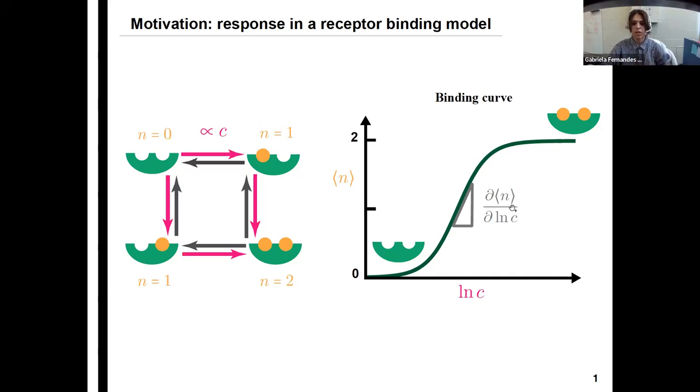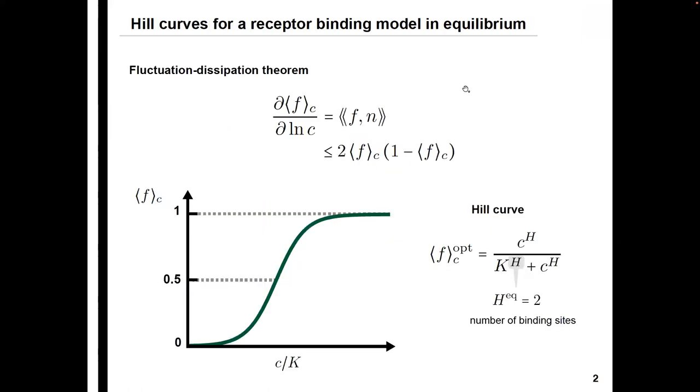An interesting question that we can ask ourselves is, is a system that's out of equilibrium more sensitive than one that's in equilibrium? So if we're interested in studying a non-equilibrium system, we always start by asking ourselves what happens in equilibrium. And now we're talking about a general observable F, and we have in equilibrium the fluctuation dissipation theorem tells us that this sensitivity is equal to the covariance of F with N, which is the ligand occupation number.